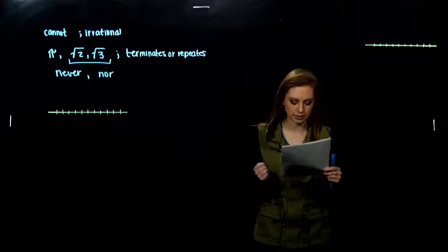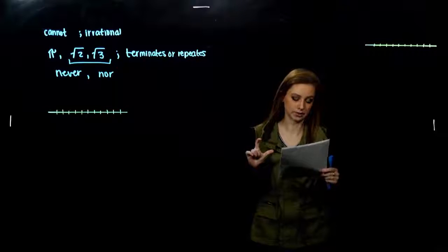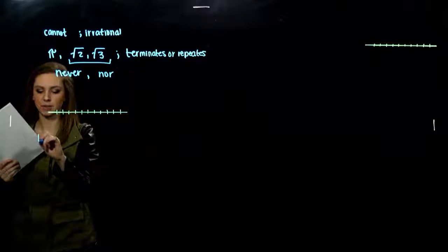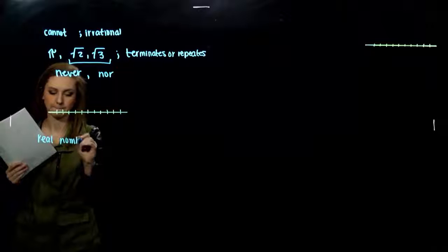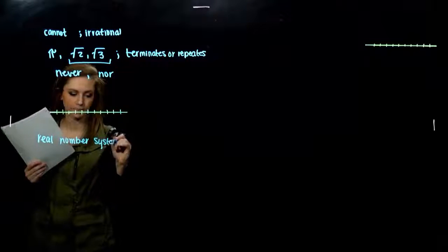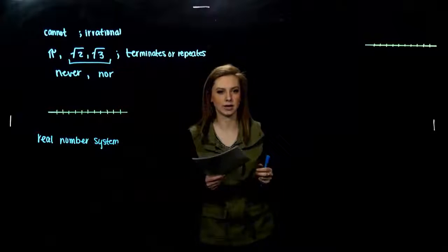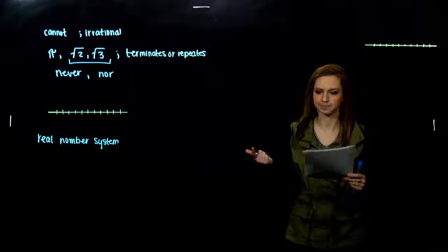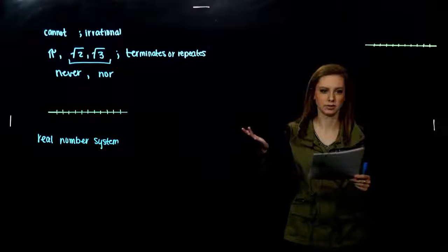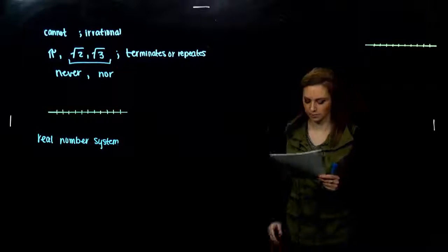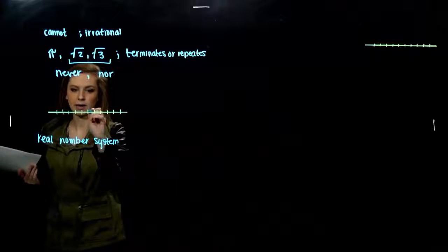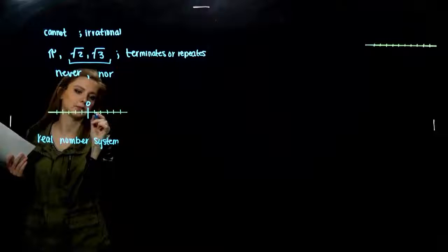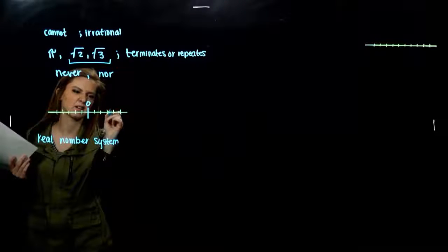The rational and irrational numbers together make up all of the points on a number line, and we call it the real number system — since we haven't excluded anything. We've got all the rationals, which consist of integers, whole numbers, fractions, and decimals, and then the irrationals that never end and never repeat. On a number line, if I've got my zero here, I could plot pi — 3.14 something continuing on — somewhere around 3. That's pi.